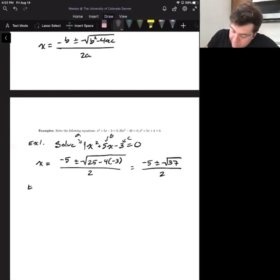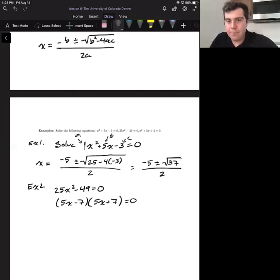Alright, so example 2: we want to solve 25x squared minus 49 equals 0. Now this is one that we can use the difference of squares because it doesn't have that middle term. And so we take the difference of squares. We get 5x minus 7, 5x plus 7, equals 0.